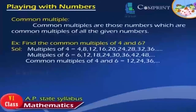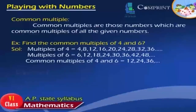Common Multiples: Common multiples are those numbers which are common multiples of all the given numbers. Example: Find the common multiples of 4 and 6. Multiples of 4: 4, 8, 12, 16, 20, 24, 28, 32, 36, … Multiples of 6: 6, 12, 18, 24, 30, 36, 42, 48, … Common multiples of 4 and 6 are 12, 24, 36, and so on.